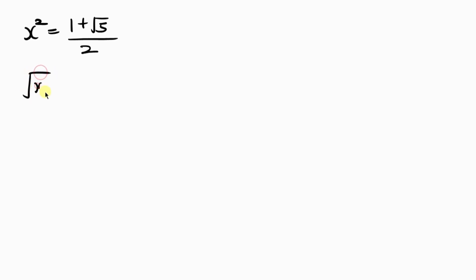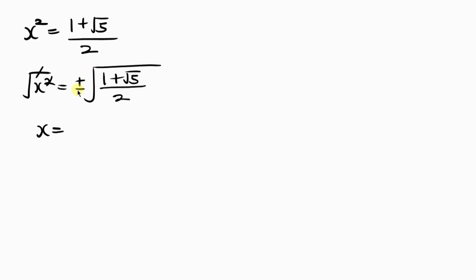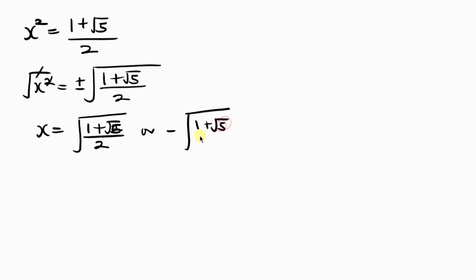Taking the square root of both sides: the square root of X squared equals plus or minus the square root of 1 plus root 5, all over 2. The square and the square root cancel, leaving X equal to either the positive square root of (1 plus the square root of 5) all over 2, or the negative version. But X cannot be negative since this is a right-angled triangle, so the negative is rejected. Therefore X equals the square root of the golden ratio — because this expression is actually the golden ratio.